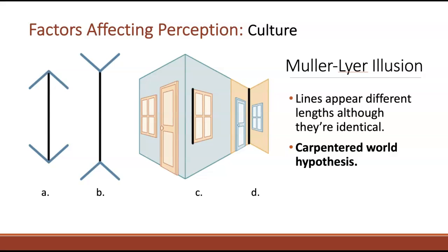One theory is that culture can influence how we perceive things. Researchers tested the carpentered world hypothesis — the idea that people from different cultures experience this illusion differently. They found this is true. People from a 'carpentered world' — a Western culture where most buildings have right angles — are more likely to perceive the illusion and see one line as longer. Whereas people from cultures where they live around more circular or round buildings are less likely to experience this illusion.